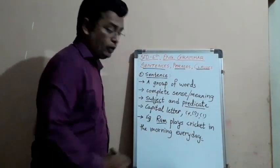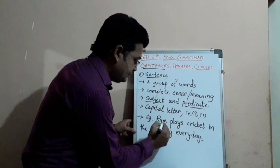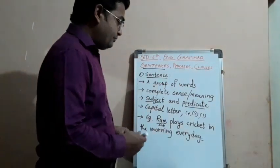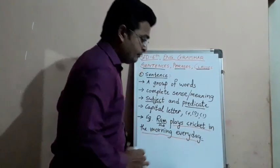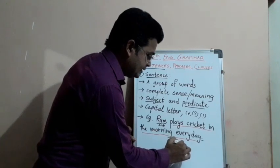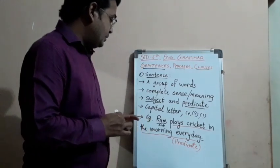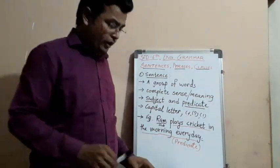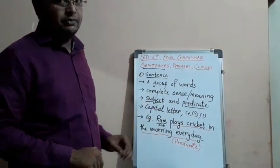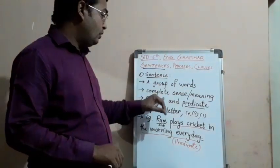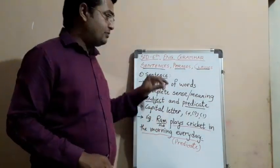The first word is a noun — a name of a boy — and that is known as the subject. The other words in the sentence — 'plays cricket in the morning every day' — are considered the predicate. Ram, the boy, tells us what activity he does: he plays cricket, when — in the morning, and this activity is done every day. So we have the full meaning — a complete sense — and that is why it is known as a sentence.